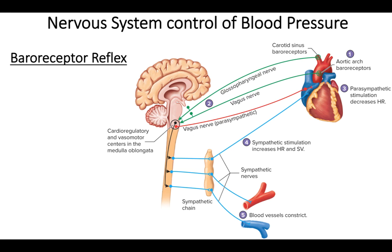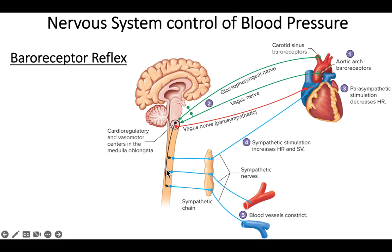If the stimulus was low blood pressure, the medulla oblongata is going to activate sympathetic nerves. Instead of using the cranial nerve vagus, it's going to use spinal nerves. The signal comes down the spinal cord and out the sympathetic nerves, and then we use the cardiac accelerator nerves to stimulate the heart to beat faster and harder to increase cardiac output and increase pressure. At the same time, sympathetic stimulation is sent to blood vessels, causing them to constrict, which also helps raise blood pressure.